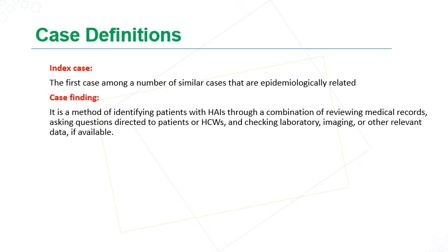The index case is defined as the first case among a number of similar cases that are epidemiologically related. So in an outbreak with multiple epidemiologically linked cases, the first case is the index case. Case finding is a method of identifying cases or patients who have acquired infection through a combination of reviewing medical records, asking questions, or gathering information from the patient's caregiver, healthcare workers, and frontline staff, including checking laboratory or imaging results in the patient file.